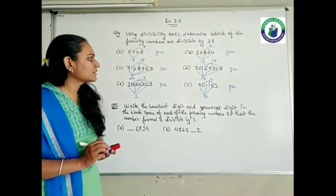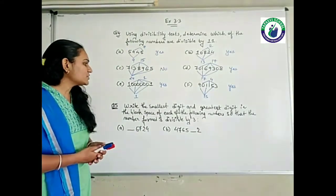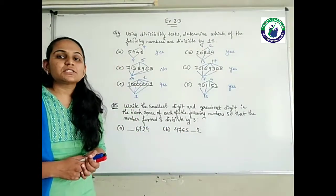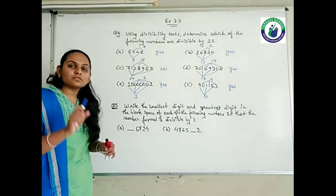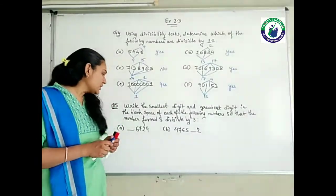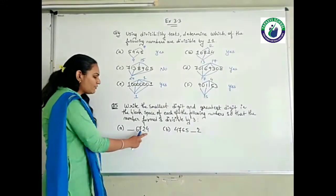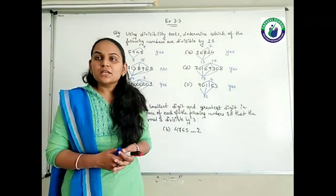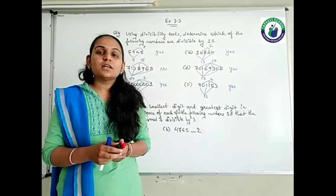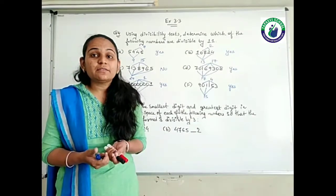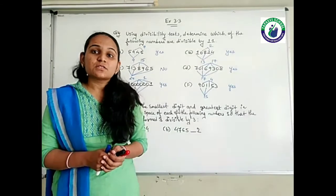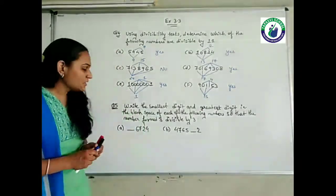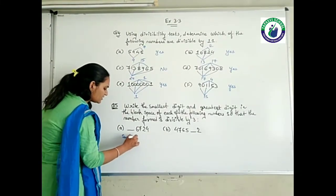Now see question number 5: write the smallest digit and the greatest digit in the blank space so that the number is divisible by 3. First, let's add the given digits — 4 plus 2 is 6, 6 plus 7 is 13, 13 plus 6 is 19. Since 19 is not divisible by 3, we start from 0. 19 plus 0 is 19 — not divisible. 19 plus 1 is 20 — not divisible. 19 plus 2 is 21 — yes, 21 is divisible by 3. So the smallest digit is 2.